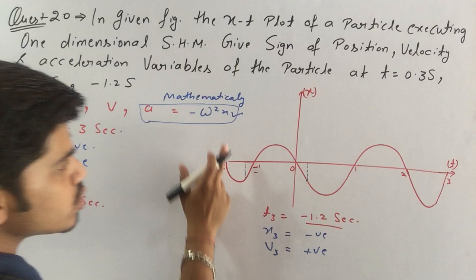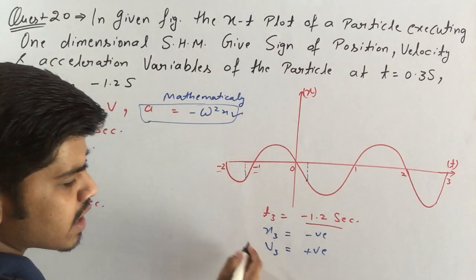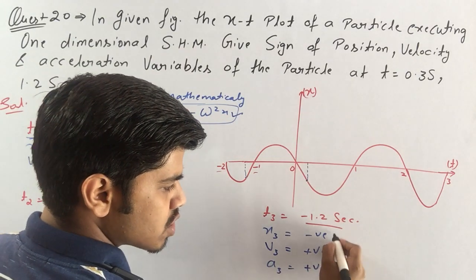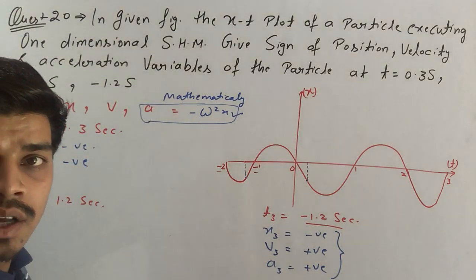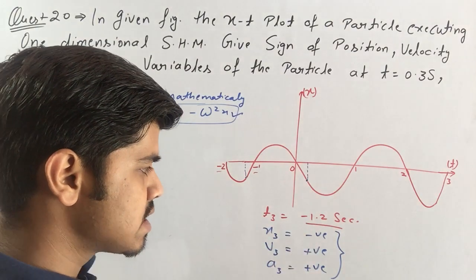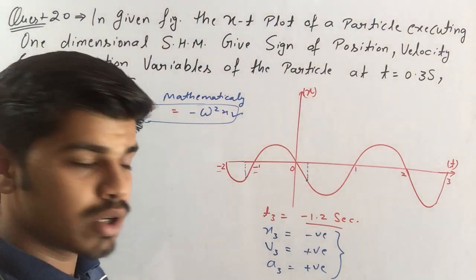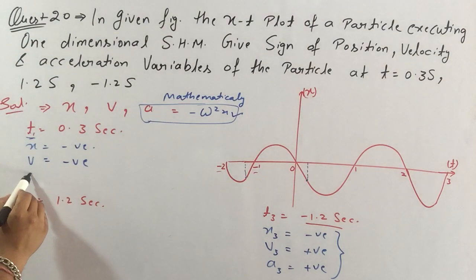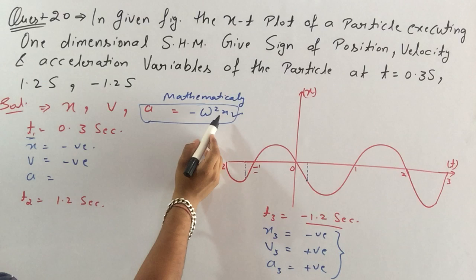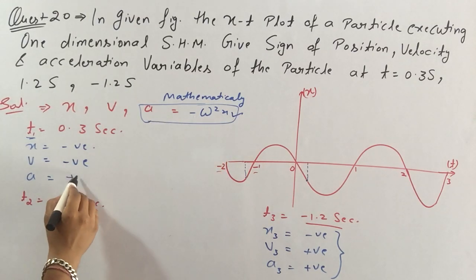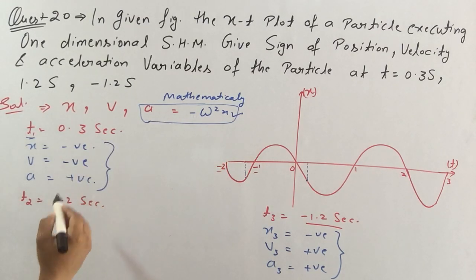Now if I put x here, put negative, acceleration what will be? Positive. In this case acceleration will be positive. Okay, this is all about third case at time minus 1.2 second.